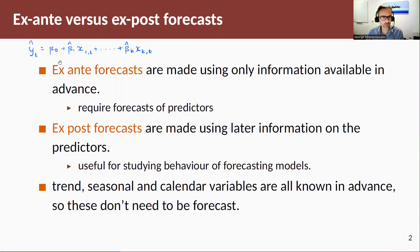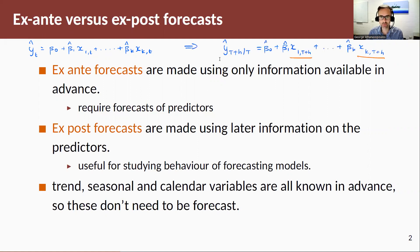Let's think a little bit about the regression model and the challenge forecasting brings. If this is my specified model and I want to forecast the future, let's say my sample is from 1 to capital T, and I want to go out of sample T plus H steps ahead. The challenge here is that all my regressors, all my predictor variables, are also of the index T plus H, and most commonly I wouldn't know what the values of those predictors are.